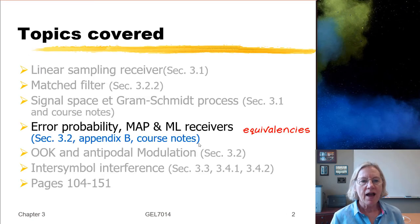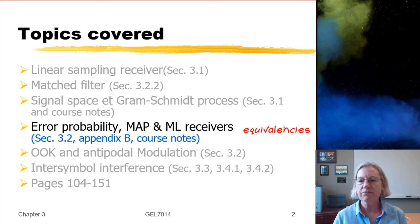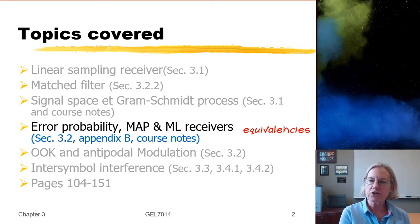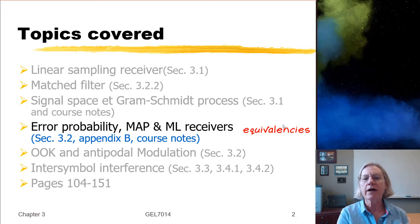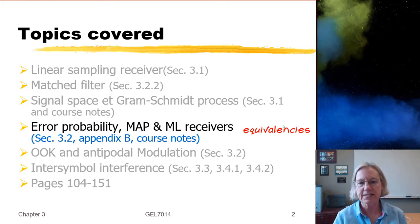We're continuing now in Chapter 3, and we're going to look at something in Section 3.2 of the Sklar textbook. In particular, I'm going to talk about some equivalencies that cover the first week of lectures when I talked about the linear sampling receiver, and more recently when I talked about the signal space analysis. Now I'd like to look at the two receiver structures that come from those two different analyses, and I'm going to show you how they're equivalent.